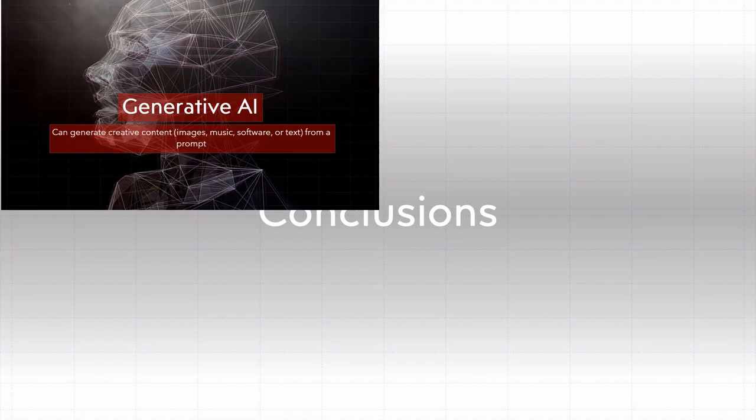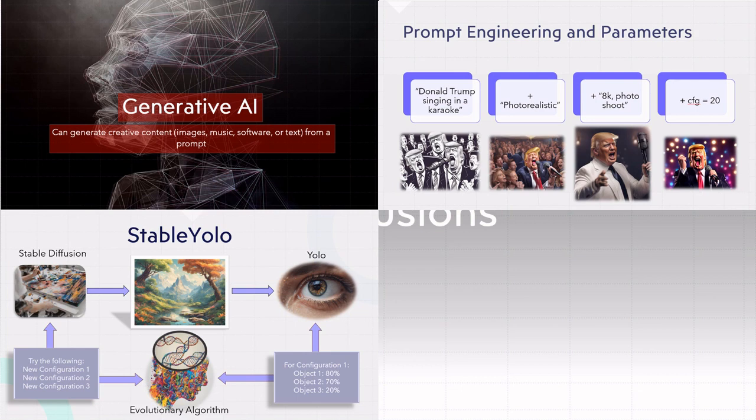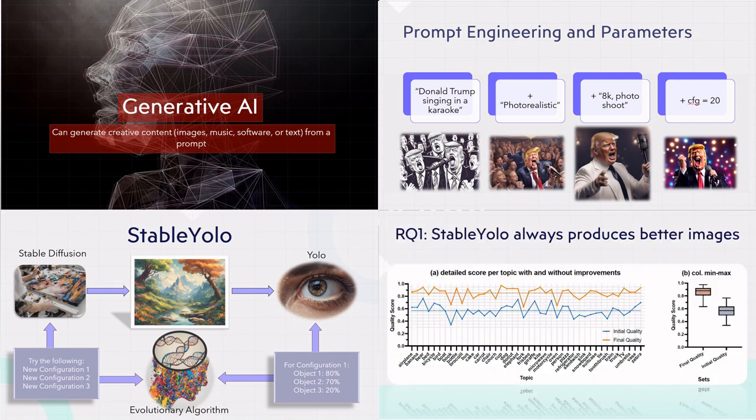To conclude: Generative AI is all around us. We want to improve it through prompt engineering and parameters — and because we want to do that automatically, we created Stable YOLO, a first step toward improving Generative AI in general. We discovered that the system is able to improve the generation of images in all cases. Thank you very much for your time, I hope you liked the video. Please follow me on Twitter, subscribe to the channel, and like the video.